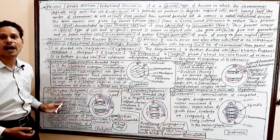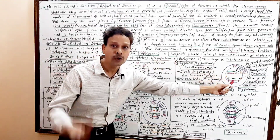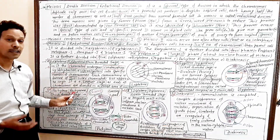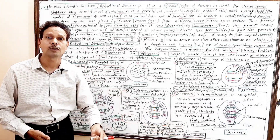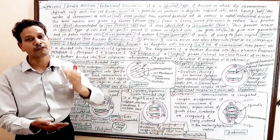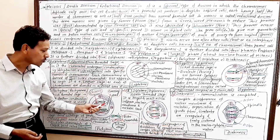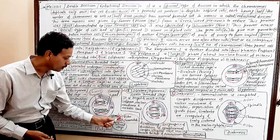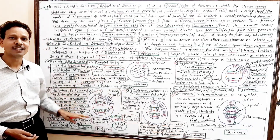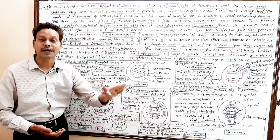The next stage is pachytene — a very important stage for all competitive exams. It is the thick threaded stage: the chromatin in the chromosomes further condenses due to dehydration, so threads appear as thick threads. At this pachytene stage, each chromosome has two chromatids — sister chromatids — so it is a dyad stage.